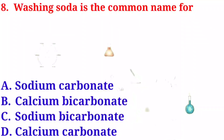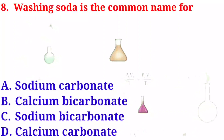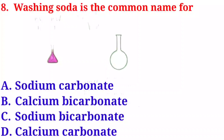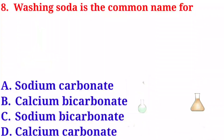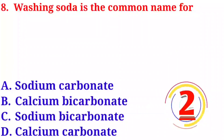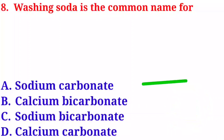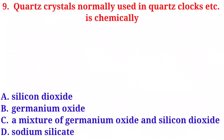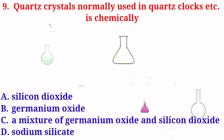Question number eight: the common name for washing soda is — option A: sodium carbonate. Option B: calcium carbonate. Option C: sodium bicarbonate. Option D: calcium carbonate. The correct answer is option A, sodium carbonate.